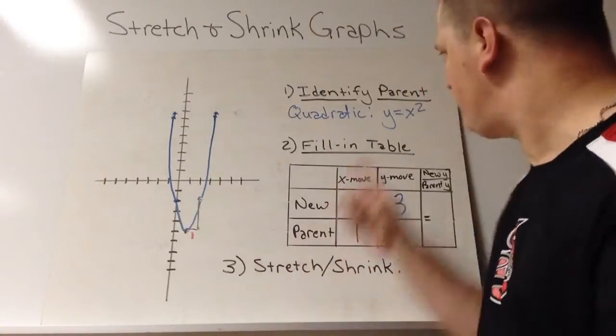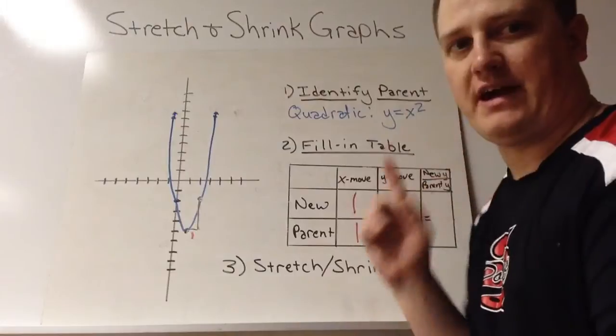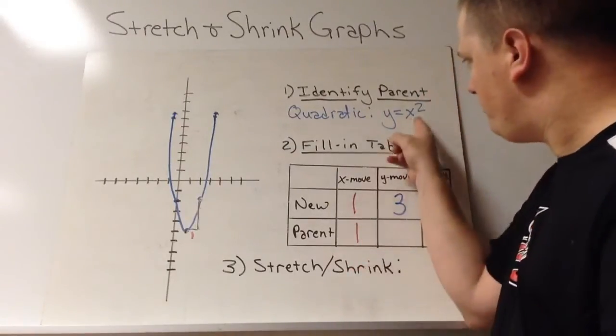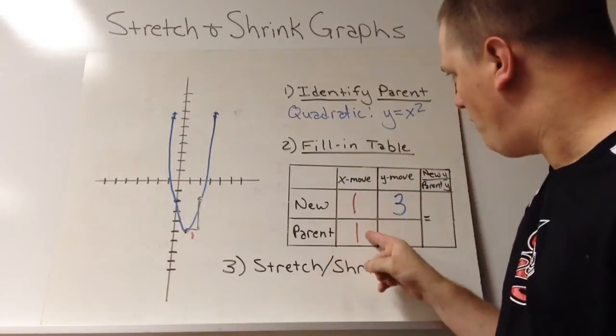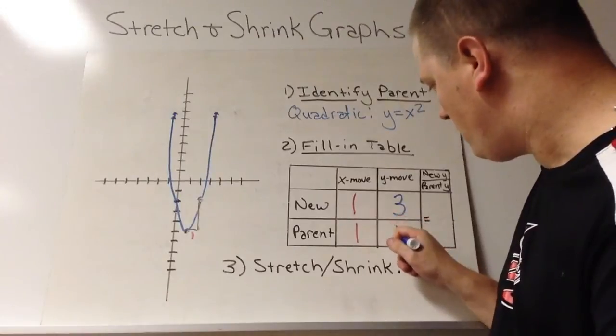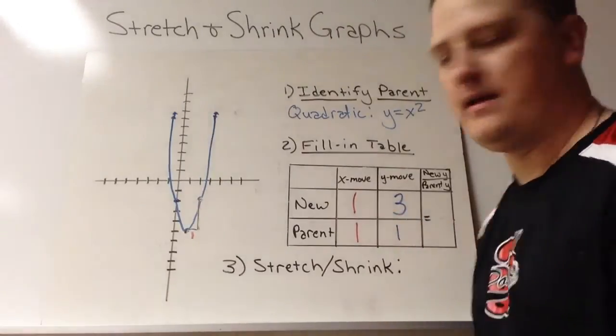Then we need the y move of the parent. And this is why we need the equation. To find out the y move of the parent, you take your x move and you put it in for x. So 1 put in for x would be 1 squared. So here we need to get 1.